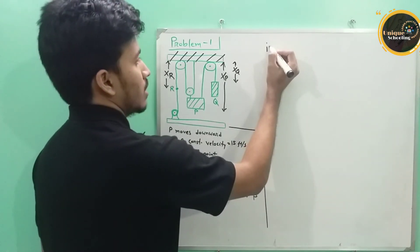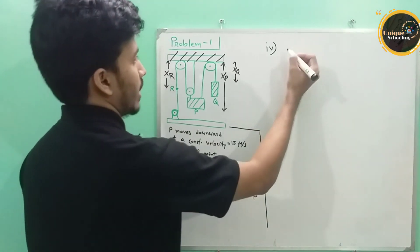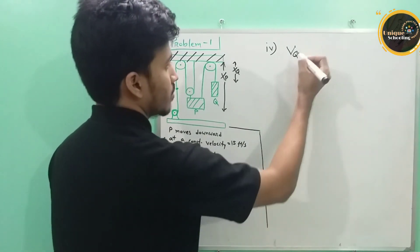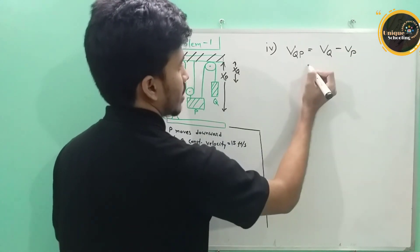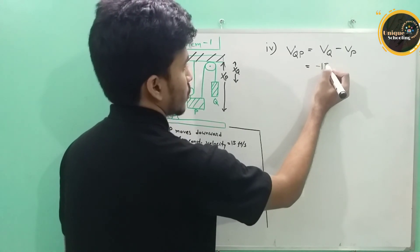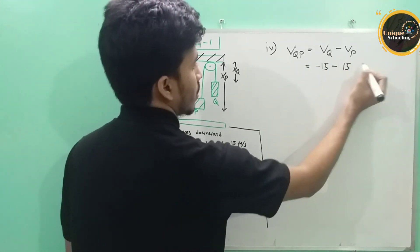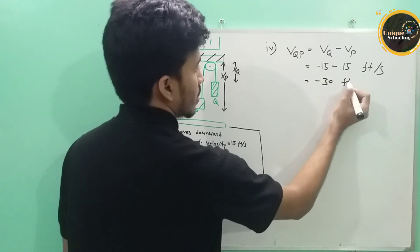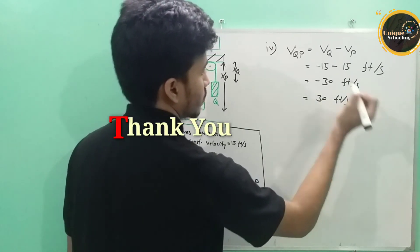The next problem is related to the relative velocity of Q with respect to P. The velocity of Q with respect to P is equal to VQ minus VP. VQ is 15 feet per second upward and VP is 15 feet per second downward, so the relative velocity will also be 30 feet per second upward.